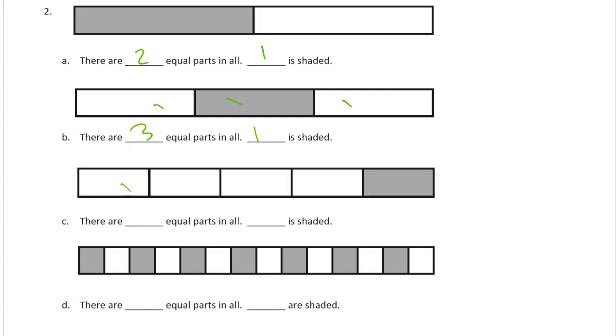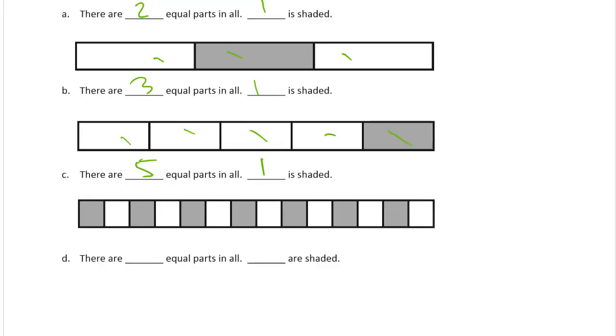And here we have one, two, three, four, five equal parts in all. One of them is shaded.